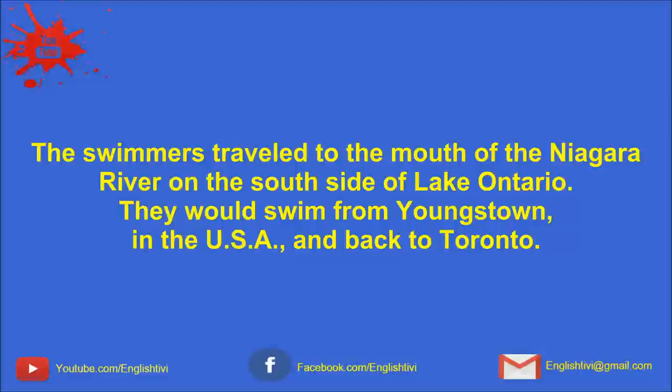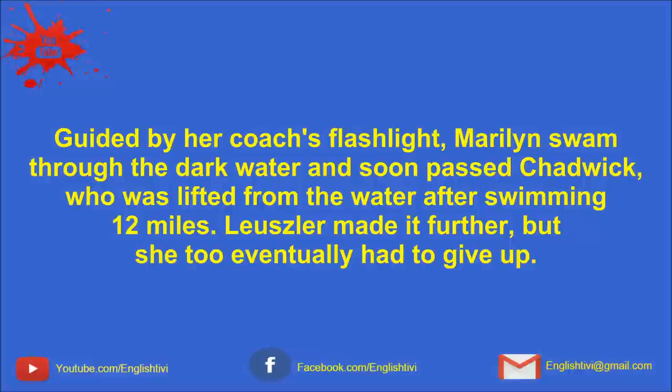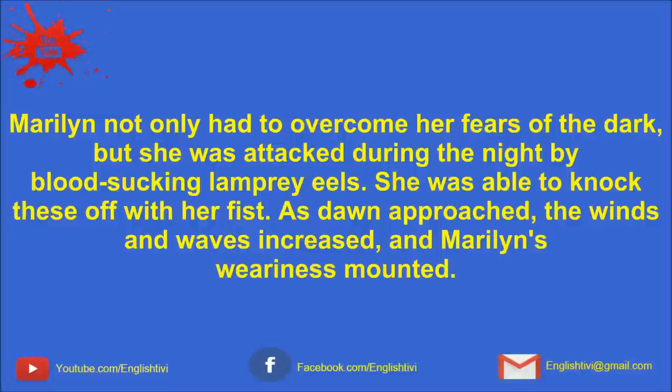The swimmers traveled to the mouth of the Niagara River on the south side of Lake Ontario. They would swim from Youngstown in the USA back to Toronto. Bad weather delayed the swim for several days. During the night of September 8th, the weather cleared, and the swimmers entered the water before midnight. Guided by her coach's flashlight, Marilyn swam through the dark water and soon passed Chadwick, who was lifted from the water after swimming 12 miles. Lousler made it further, but she too eventually had to give up.